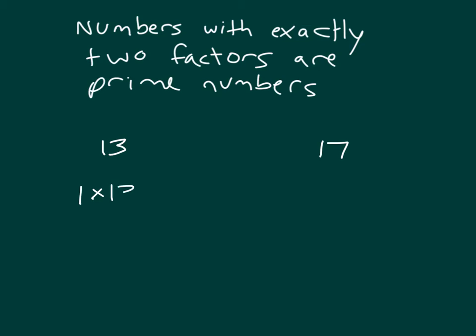If we multiply 1 by 13, we get 13. We can't use 2 because 2 times 6 is 12, and 2 times 7 is 14. We can't get to 13 evenly. 3? Nope. 3 times 4 is 12, 3 times 5 is 15. Can't do that either.